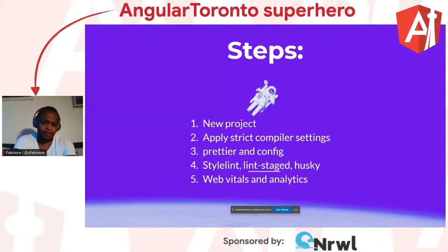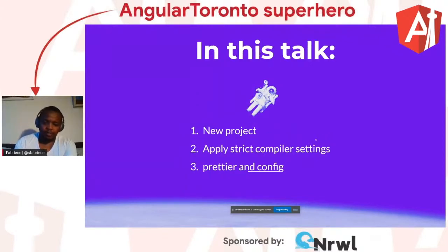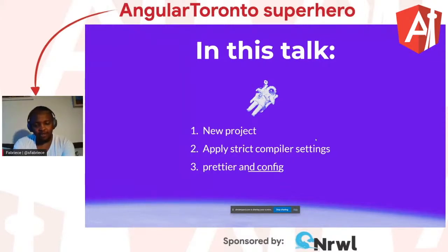One option was to have a base project which I can base things off. But another one is actually creating a schematic that I could apply to my project and have it apply whatever settings I need company-wide. In this talk, I'll go through the first three steps: creating a new project using the Angular CLI, applying strict compiler settings, and adding Prettier with its accompanying configurations.